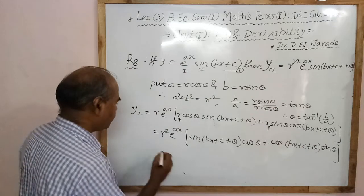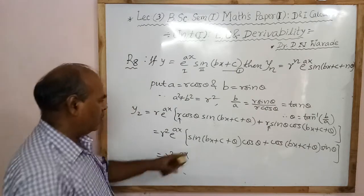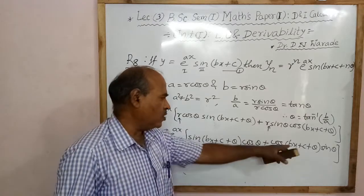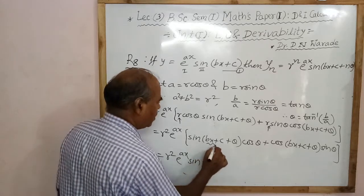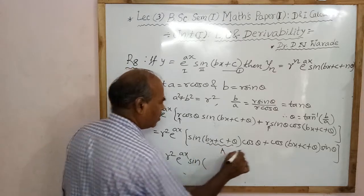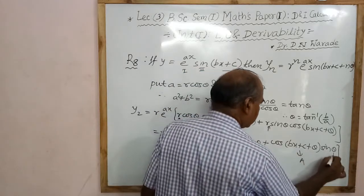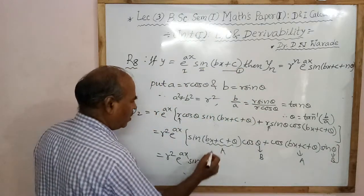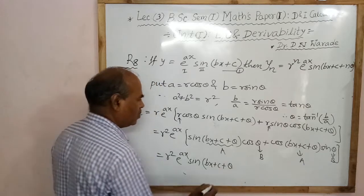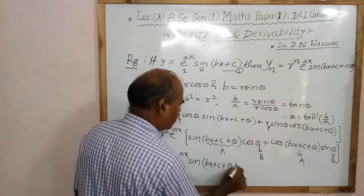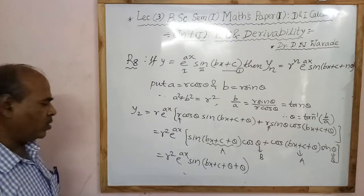Then we use the same formula: R squared into e to the power x, sin a cos b plus cos a sin b equals sin of a plus b. Where a is bx+c+theta and b is theta. Therefore theta plus theta gives twice theta.